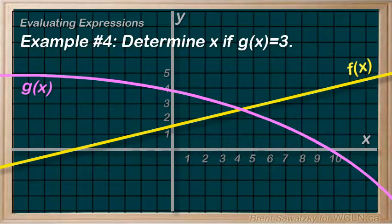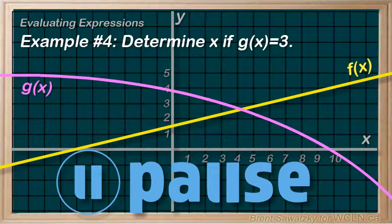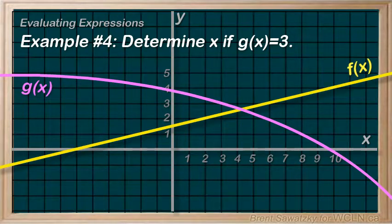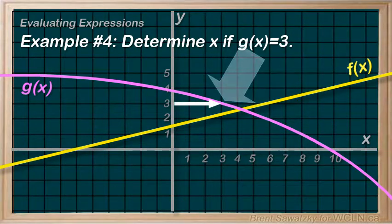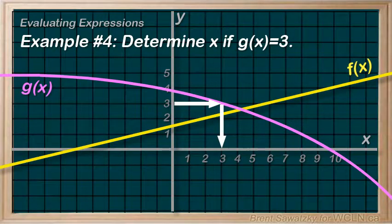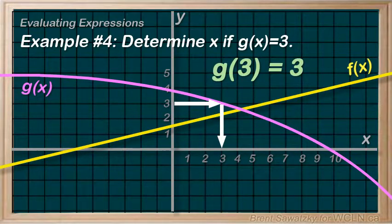Example 4: Determine x if g(x) equals 3. Pause the video and give this one a try. We're talking about function g, and the y value of function g is 3 right here. We follow that down and see that x equals 3 at this point. Therefore, g(3) equals 3, or x equals 3 when g(x) equals 3. Again, they both mean the exact same thing.